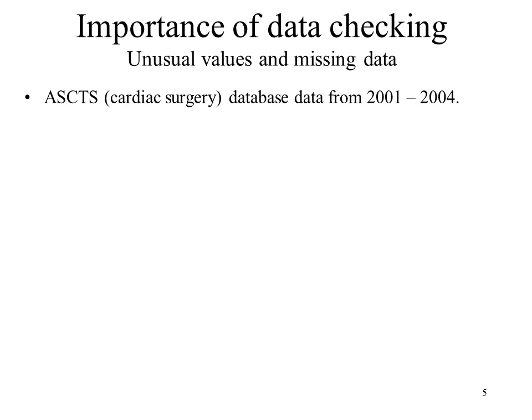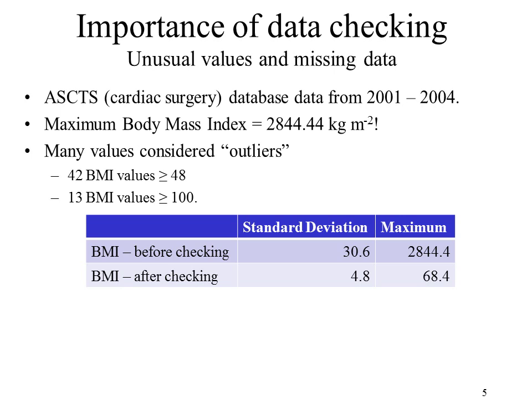This is an example of the importance of data checking, because there are some rather unusual values and missing data. This was when I was doing my honours project in 2005, using the cardiac surgery dataset from 2001 to 2004. When I first got my hands on the dataset and was getting my head around all of the variables — there were over 200, so it was a little overwhelming — I started doing some simple descriptive statistics: the mean, standard deviation, minimum and maximum. The maximum body mass index in this dataset was 2844.44. This rather shocked me because I know that a normal BMI is between 20 and 25, and a BMI of over 30 is regarded as obese.